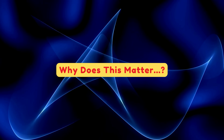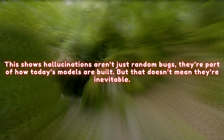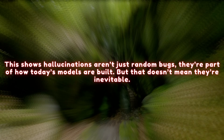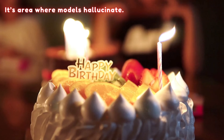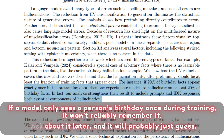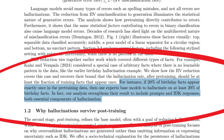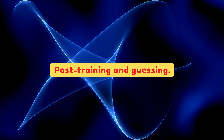This shows hallucinations aren't just random bugs — they're part of how today's models are built. But that doesn't mean they are inevitable. For instance, let's consider an example of birthdays, an area where models hallucinate. If a model only sees a person's birthday once during training, it won't reliably remember it. Ask about it later and it will probably just guess. The paper highlights this with data: if 20% of birthday facts appear only once in the pre-training data, then base models are expected to hallucinate on at least 20% of those birthday facts.